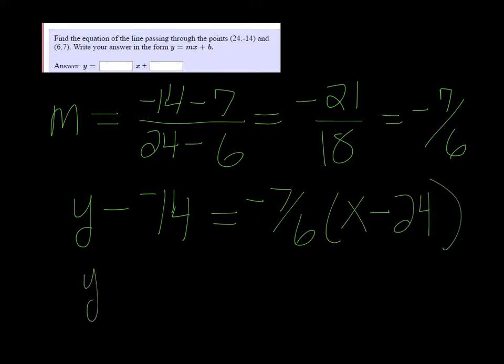And distributing, well, y minus a negative 14 is just y plus 14. And then distributing that negative 7 over 6 through. Let's see. 24 divided by 6 is 4 times 7 is going to be a positive 28.